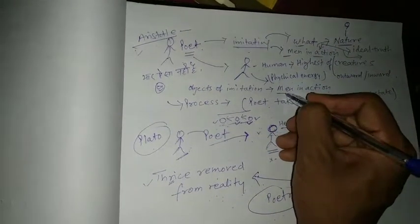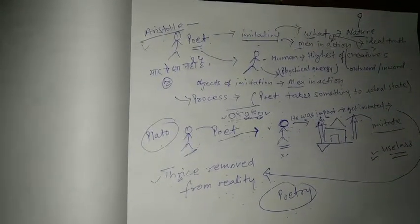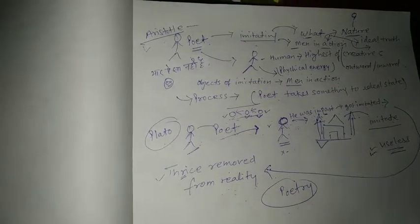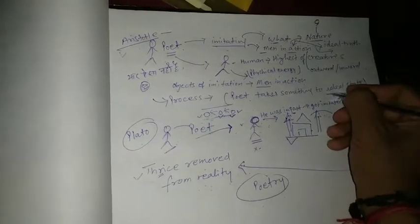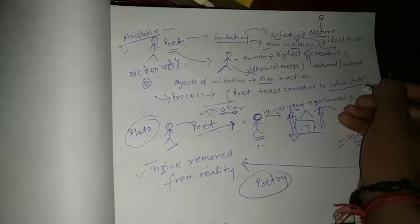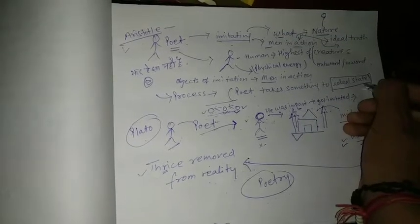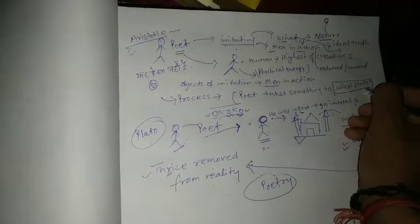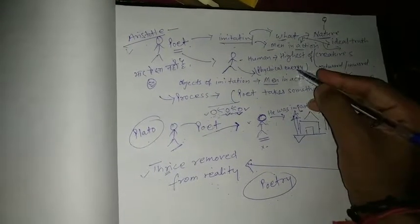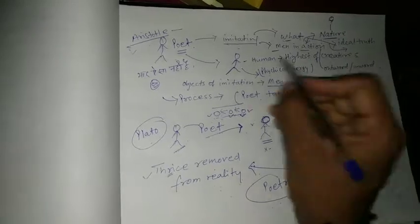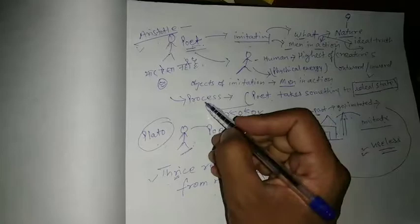So man in action doesn't mean people are working somewhere and the actions of people, no. But what is going on, it is a process, being ideal, ideal state. So we all are, there is something going on inside us all in all ages, and all people are trying to achieve ideal state for human. And this is the process what poets are imitating. That's why the process of imitation is different.